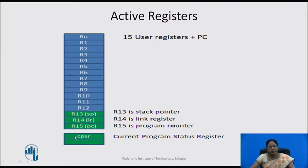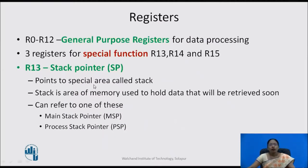Along with that, there is one more register which is CPSR. CPSR and SPSR are the two program status registers. CPSR stands for current program status register. Registers R0 to R12 are general purpose registers used for data processing.